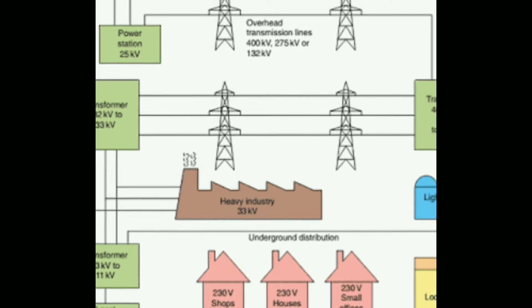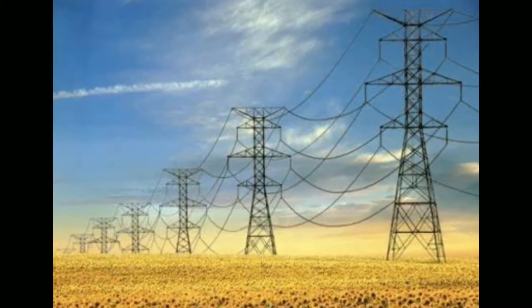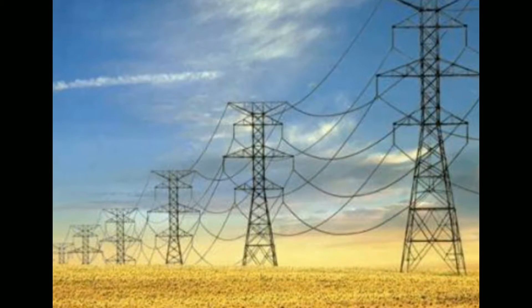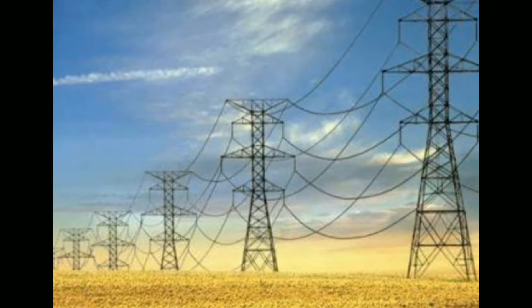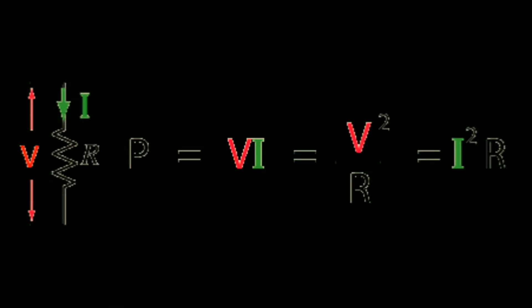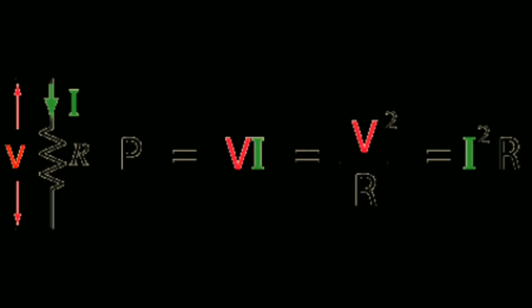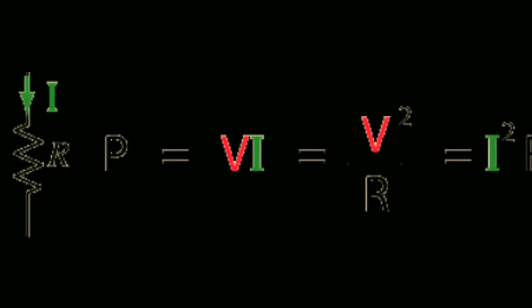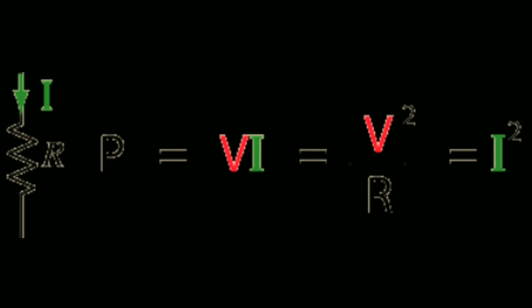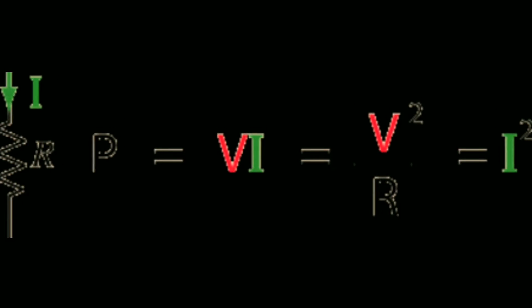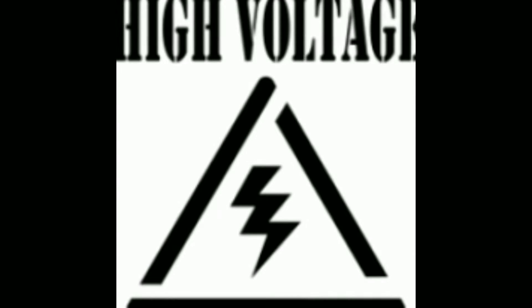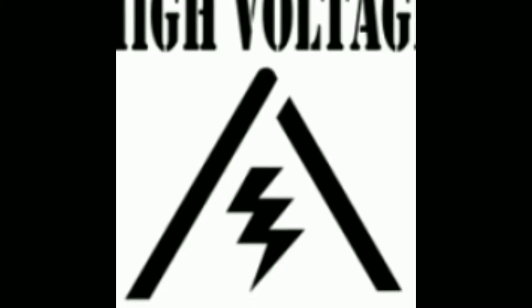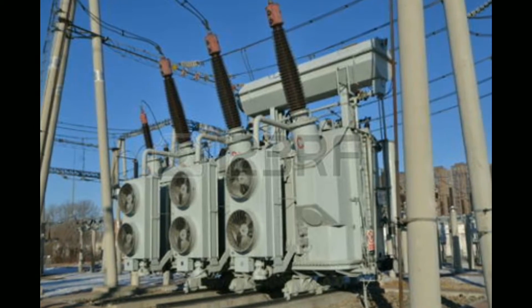This resistance only affects the current, not the voltage. So we use transformers — these step up the voltage level, and in the same ratio the current decreases. Resistance does not affect the voltage, and hence losses through the resistance are reduced.